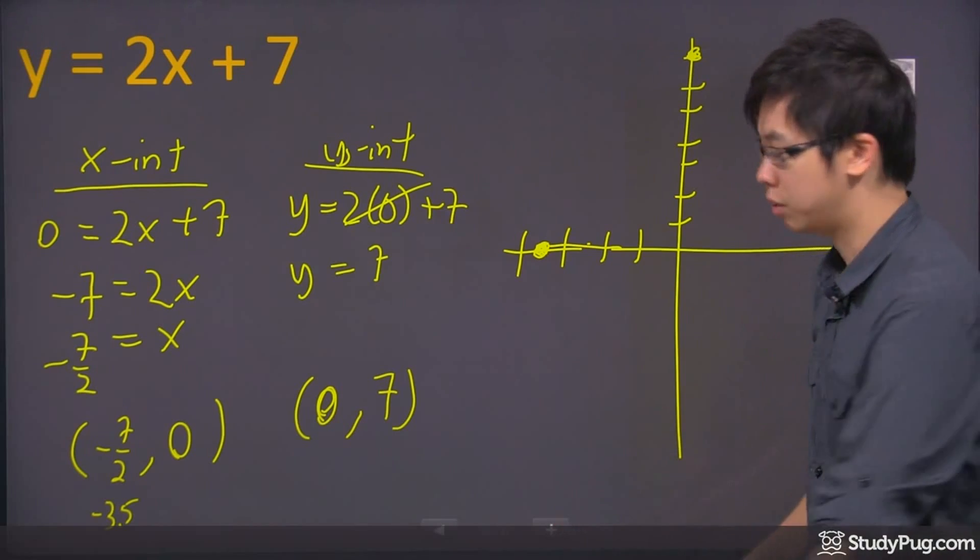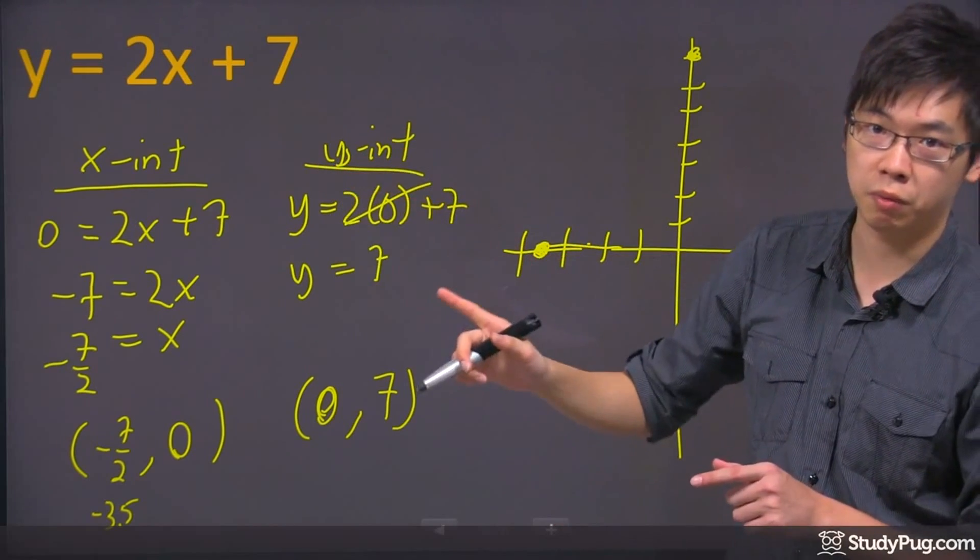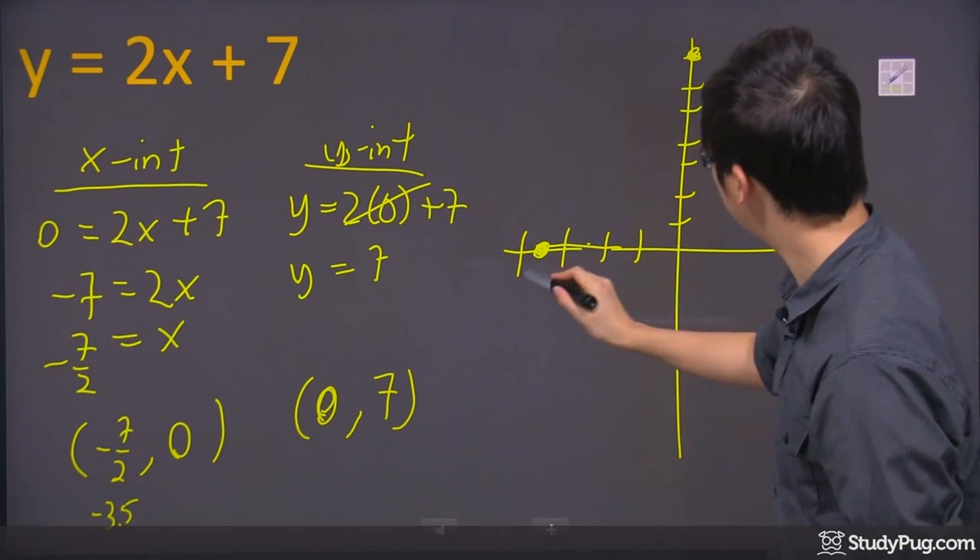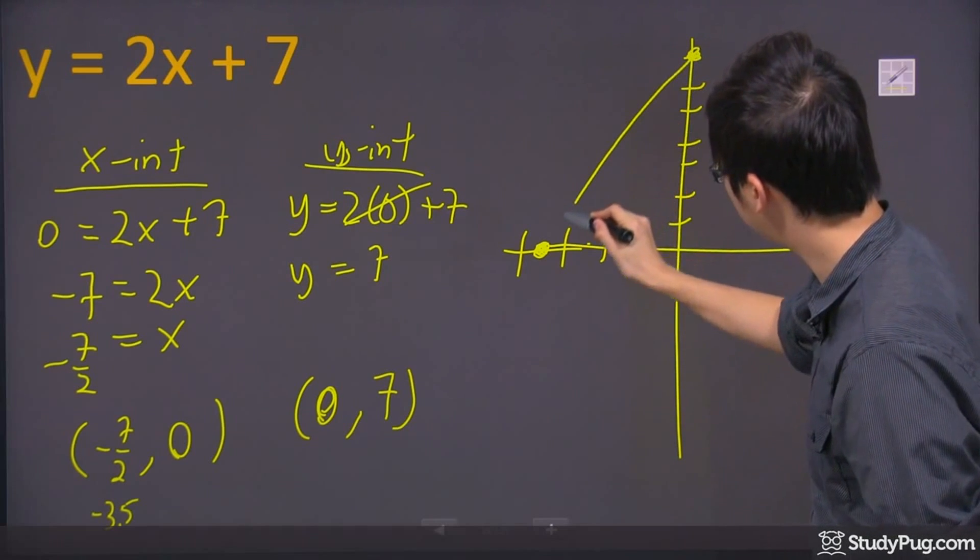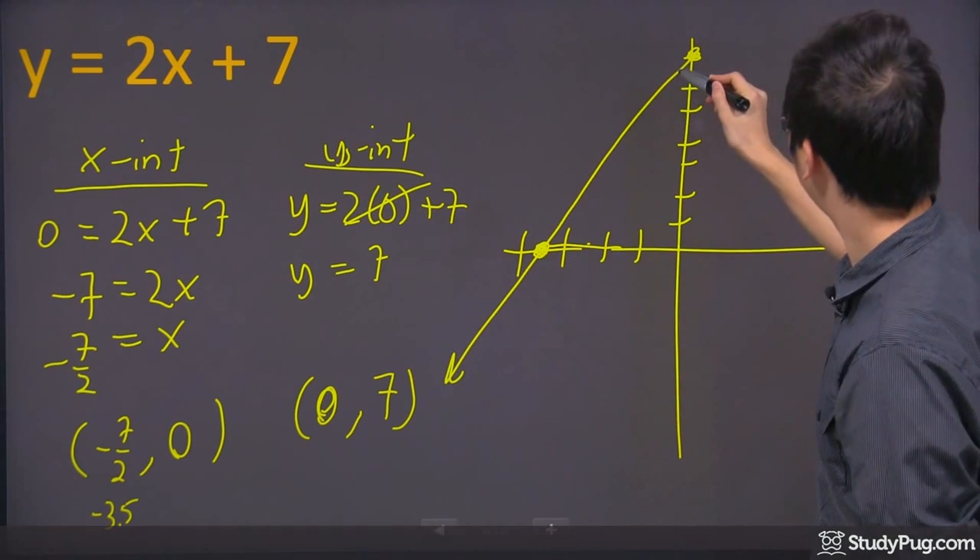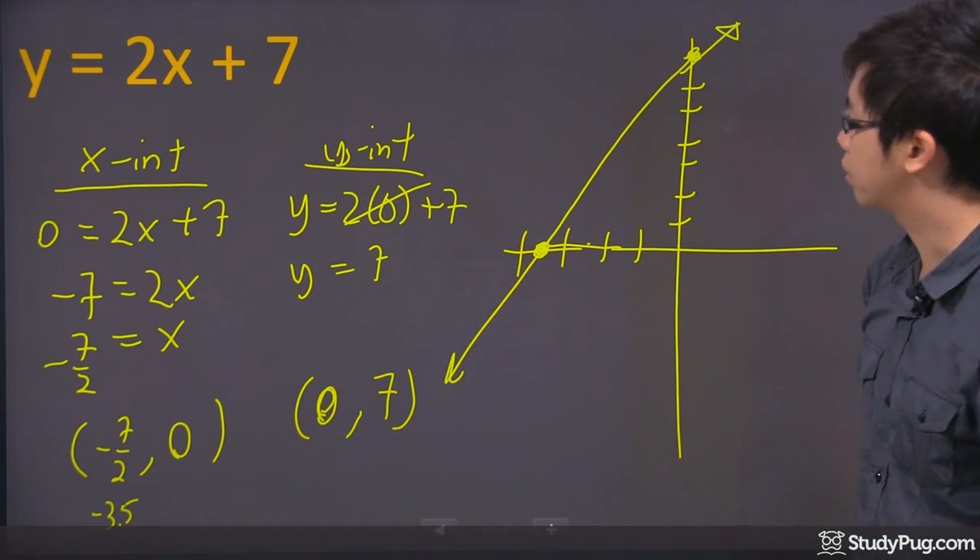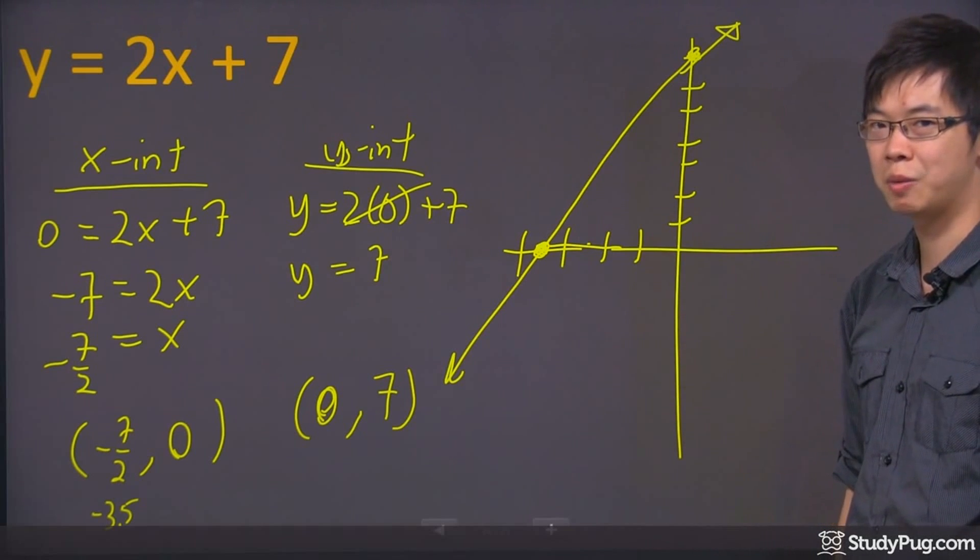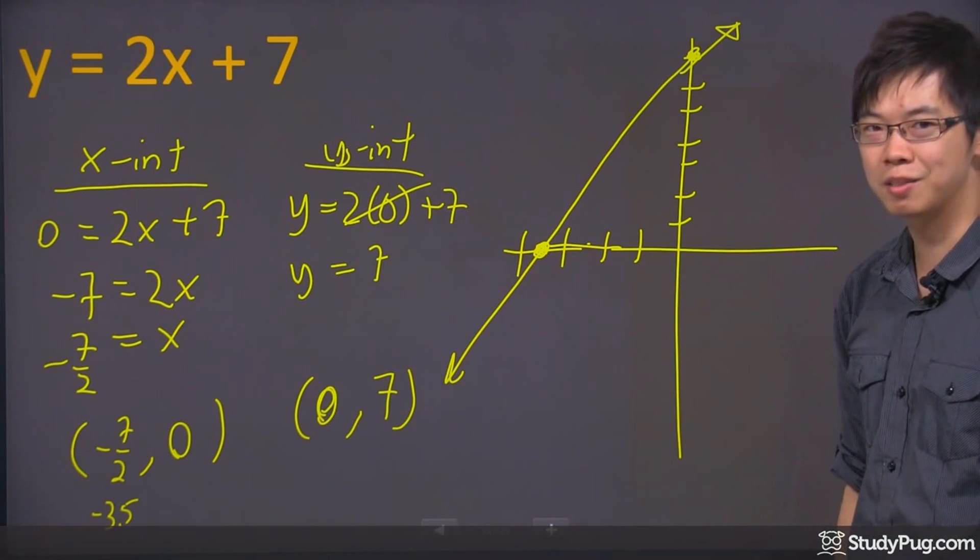And guess what? That's a linear function like we said before, it's a straight line. So all you have to do is draw a straight line from this point to that point, and you get yourself the graph of this question, just using the x and y intercepts. Thanks for watching.